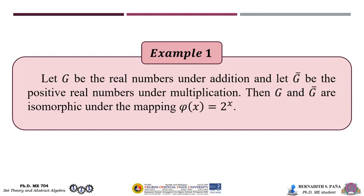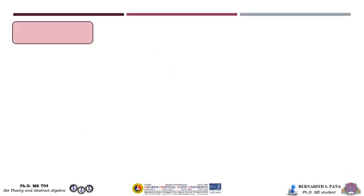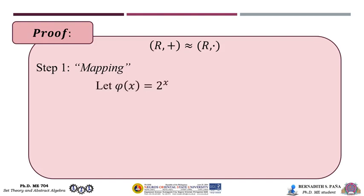To prove that G is isomorphic to Ḡ, we have to follow the four steps mentioned earlier by Ma'am Sumampong. For the first step, it is the mapping — we have to define our function. So let φ(x) = 2^x. Clearly, φ is a function from G to Ḡ.